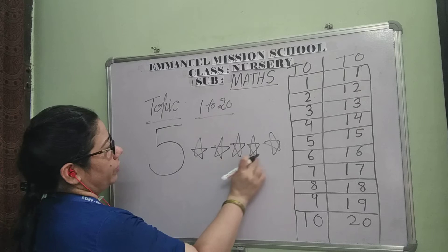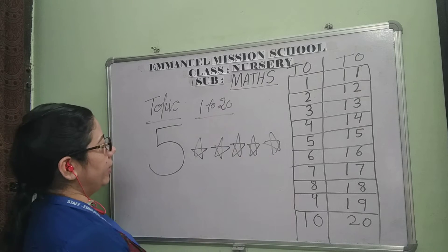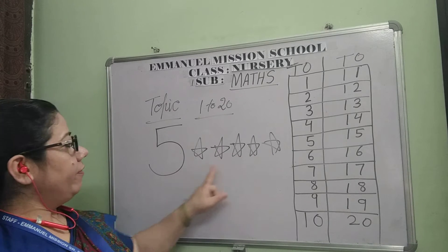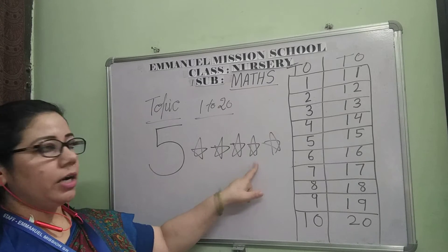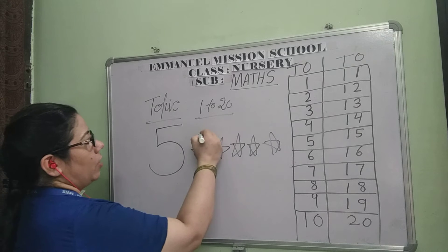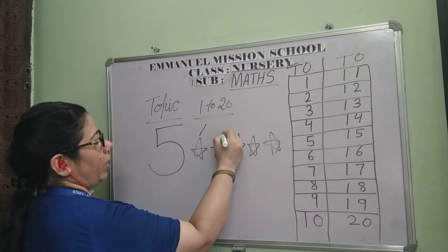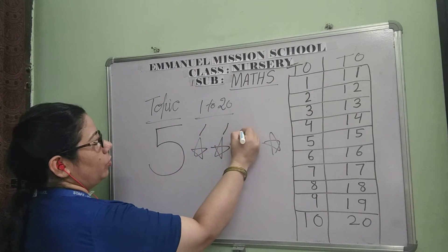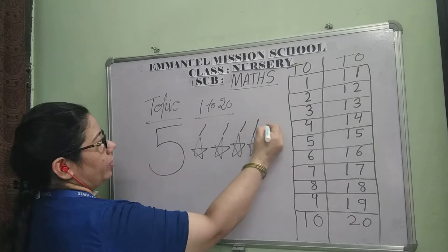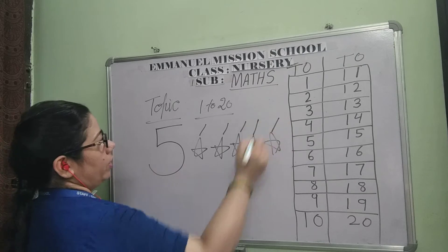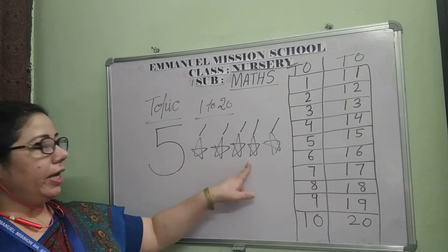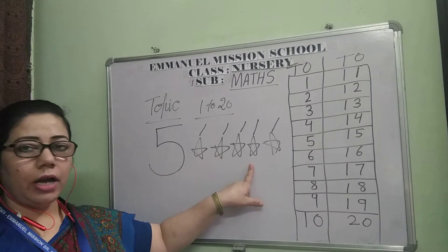1, 2, 3, 4, 5. 5 stars. How to count? 1, 2, 3, 4, 5. 5 stars.